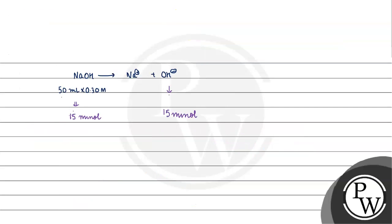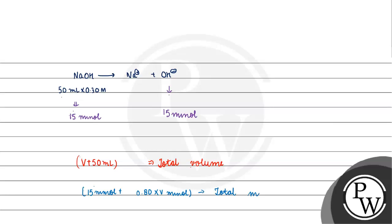Now the total volume will be V + 50 ml. The total number of millimoles of hydroxide ions will be 15 millimoles (from NaOH) plus 0.80 × V millimoles (from barium hydroxide, since each mole gives 2 OH⁻). These are the total millimoles of hydroxide ion.